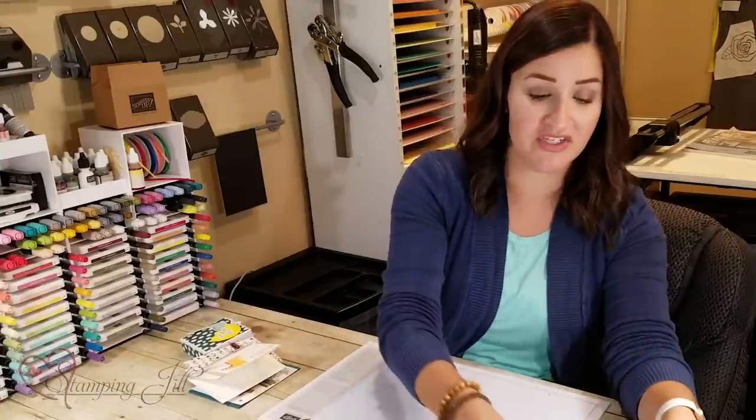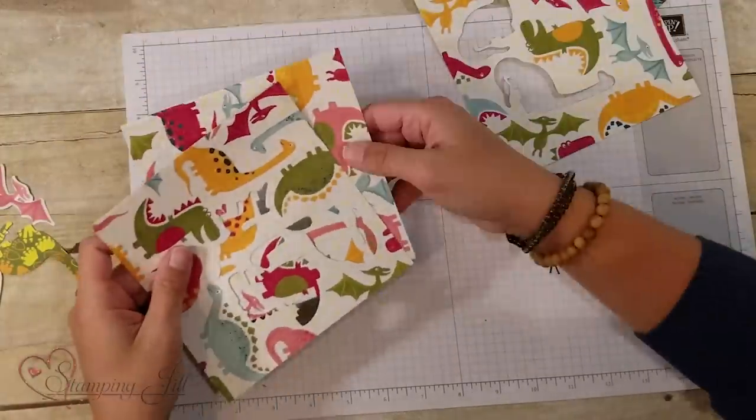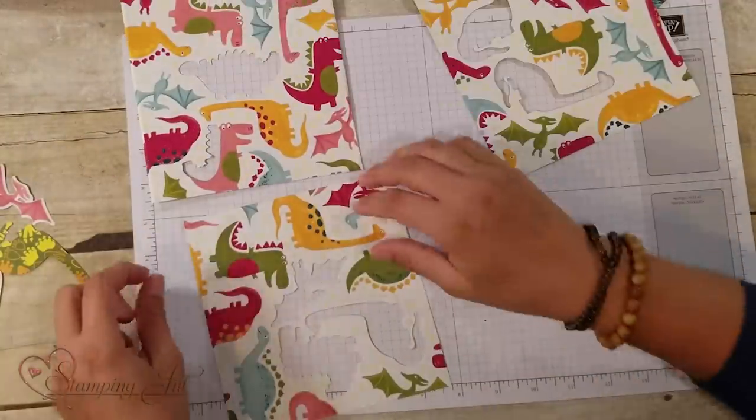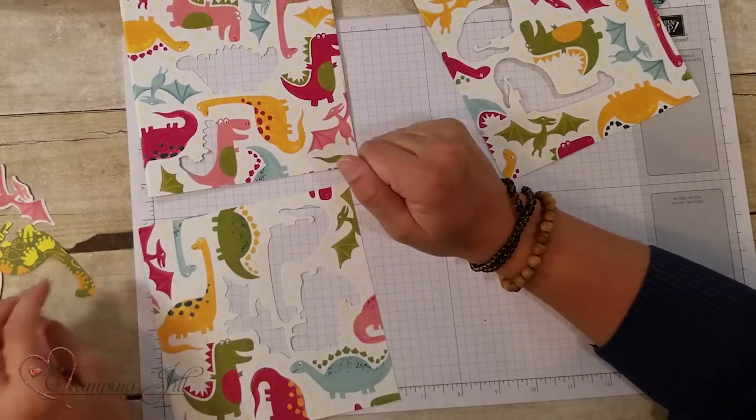So a big feature of this Designer Series Paper, something that I love so much, is on this one sheet of Designer Series Paper, it comes in a 12 by 12 sheet, and you get two of them. It has these large dinosaur images printed on it.